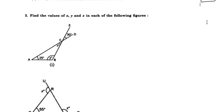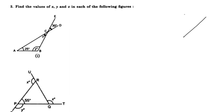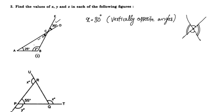Next question: find the value of x, y, and z in each of the following figures. Angle x is the given angle. x is equal to 30 degrees by vertically opposite angles.